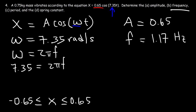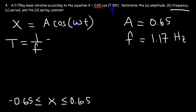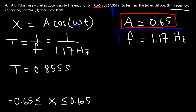Now, how can we calculate the period? If you know the frequency, then you know the period — it's simply 1 over the frequency. In this example, the period is 1 over 1.17 hertz, which gives 0.855 seconds. So now we have the amplitude, the frequency, and the period.